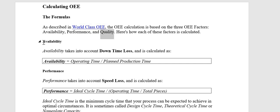First, let's talk about Availability. Availability takes into account downtime loss. Suppose you are using one machine — there is some operation time and some production time. Operating time means the actual time the machine is running. Availability is equal to Operating Time divided by Planned Production Time.